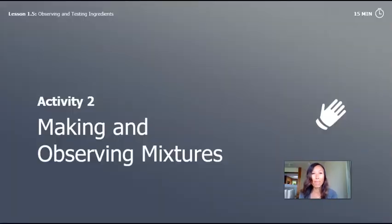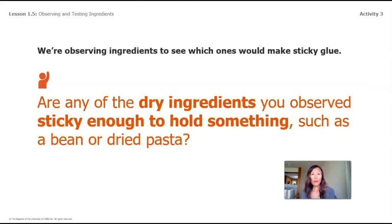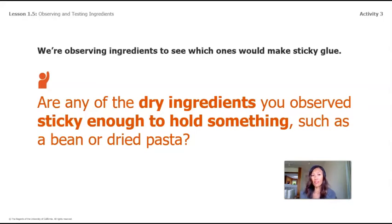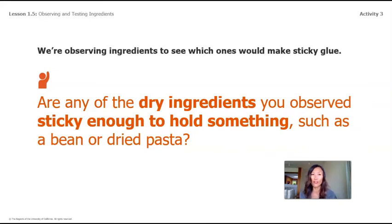Let's go on to activity two: making and observing mixtures. We're observing ingredients to see which ones make sticky glue. Are any of the dry ingredients you observed sticky enough to hold something such as a bean or our dry pasta? I bet you said no — the dry ingredients are not sticky. Our next task will be adding water and creating a mixture that will help us figure out which ingredients might make a sticky glue.